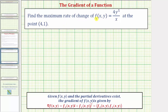We want to find the maximum rate of change of the function f(x,y) = 4y⁵/x at the point (4,1). The gradient of f gives us the direction of maximum rate of change of f at the point (4,1), but to find the actual maximum rate of change, we need to determine the magnitude of the gradient of f at the point (4,1).